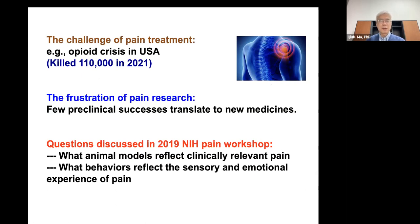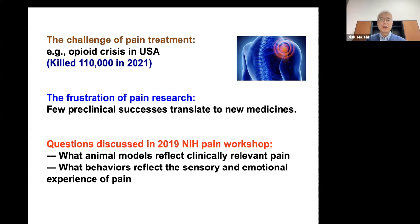Pain treatment still has many problems. For example, in the United States, beside the pandemic, we are also facing the opioid crisis. Even just in recent years, opioid overdose killed over 100,000 people in the United States alone. At the same time, the pain research field faces frustration — through many years of study, we had successful stories and molecular targets that looked like magic bullets for treating pain, but those findings have not yet translated into new pain medicines.